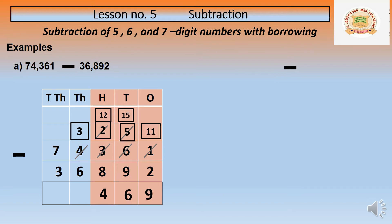In the thousands place we have 3 thousand minus 6 thousand — not possible. So we go to the ten-thousands place. From 70 thousand we take 10 thousand, making it 60 thousand. After taking that, thousands become 13 thousand. Thirteen minus six equals seven. Now in the ten-thousands place, 60 thousand minus 30 thousand: 6 minus 3 equals 3. So the answer is thirty-seven thousand four hundred sixty-nine.